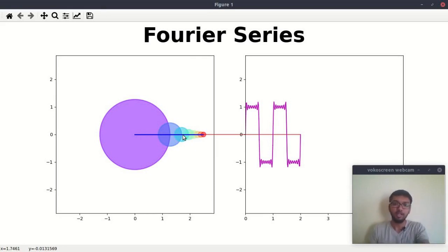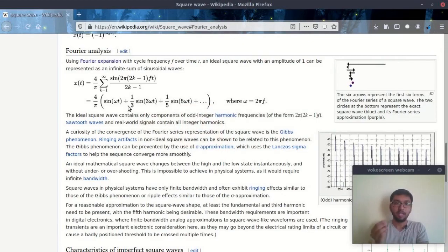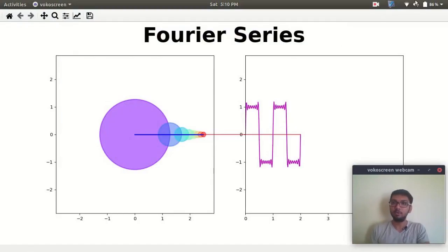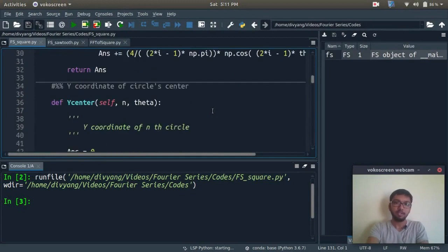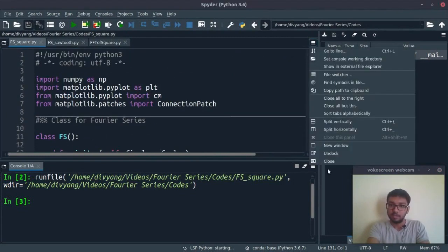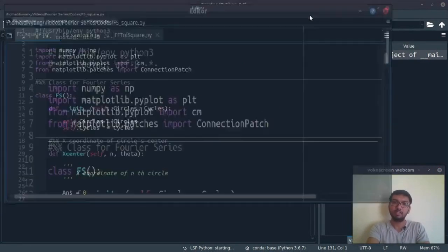For the second circle, we have to add the radius of first circle and second circle, and this process we have to repeat for the nth circle. The radius would be 4 upon pi upon one upon three for the third harmonic, 4 upon 5 for the fifth, and so on.